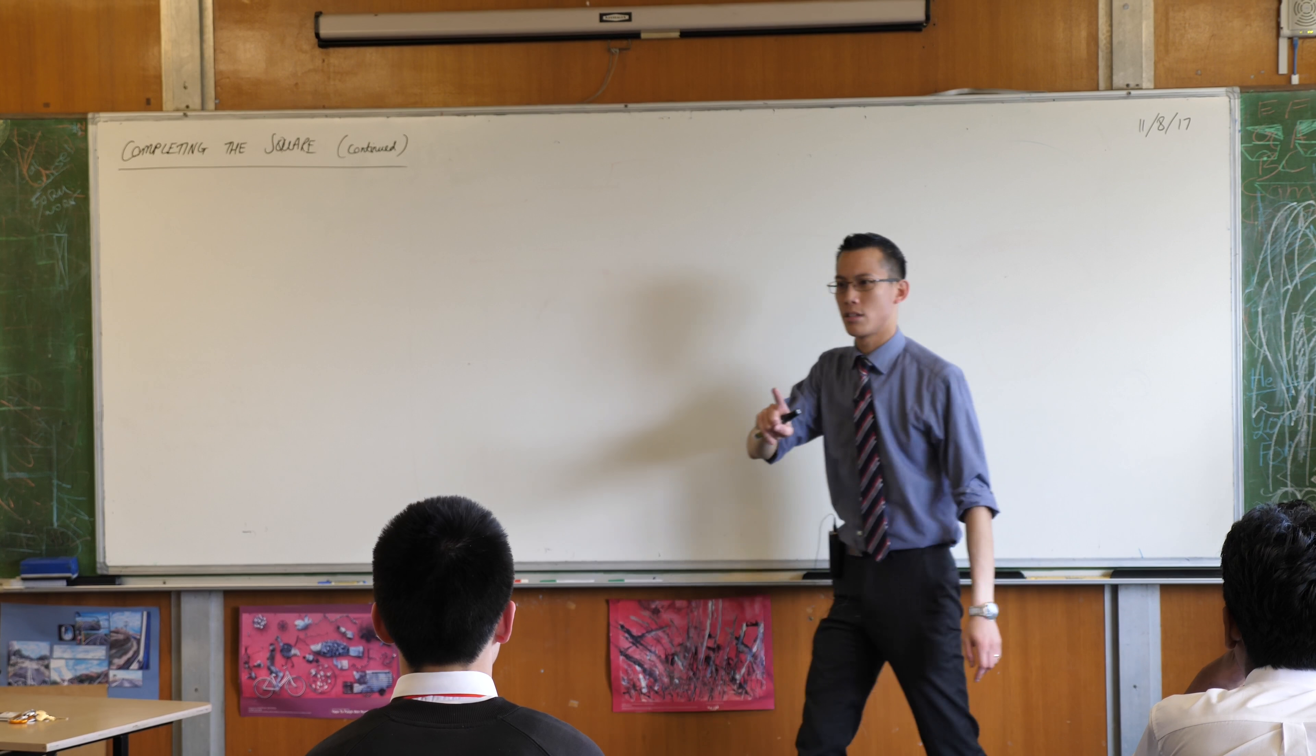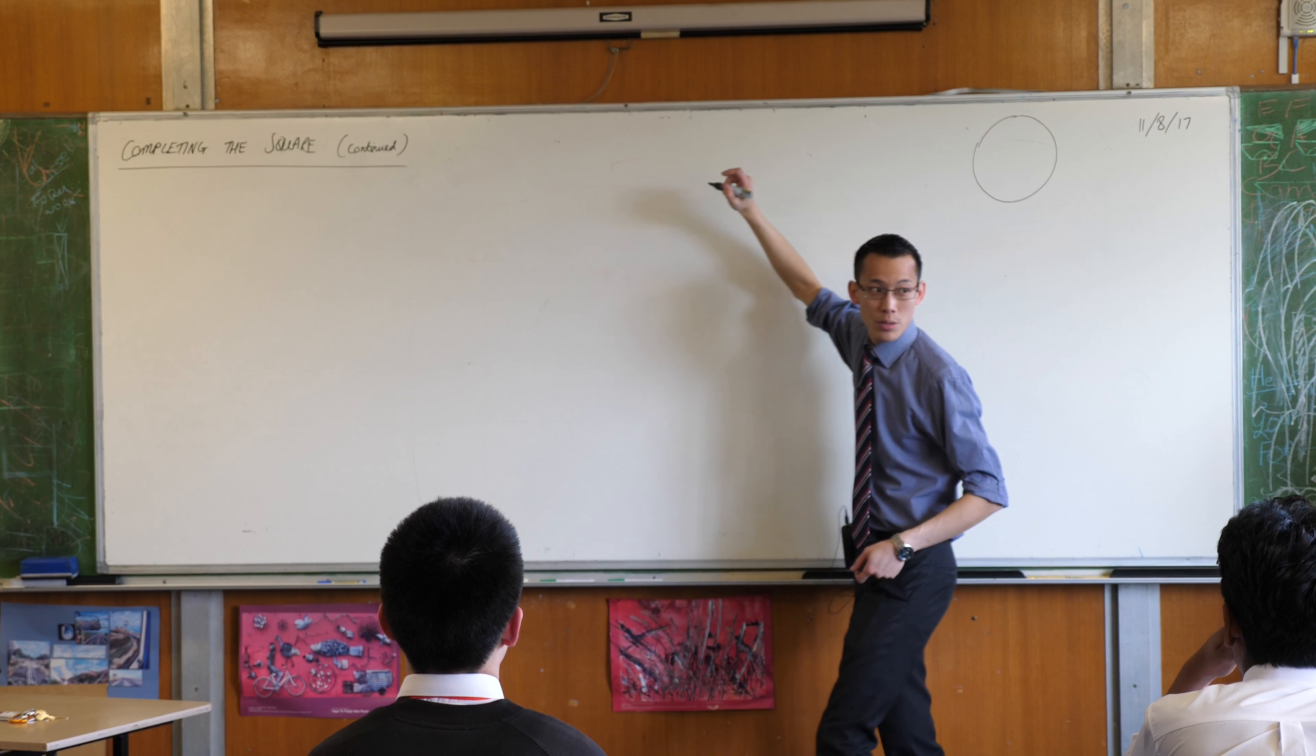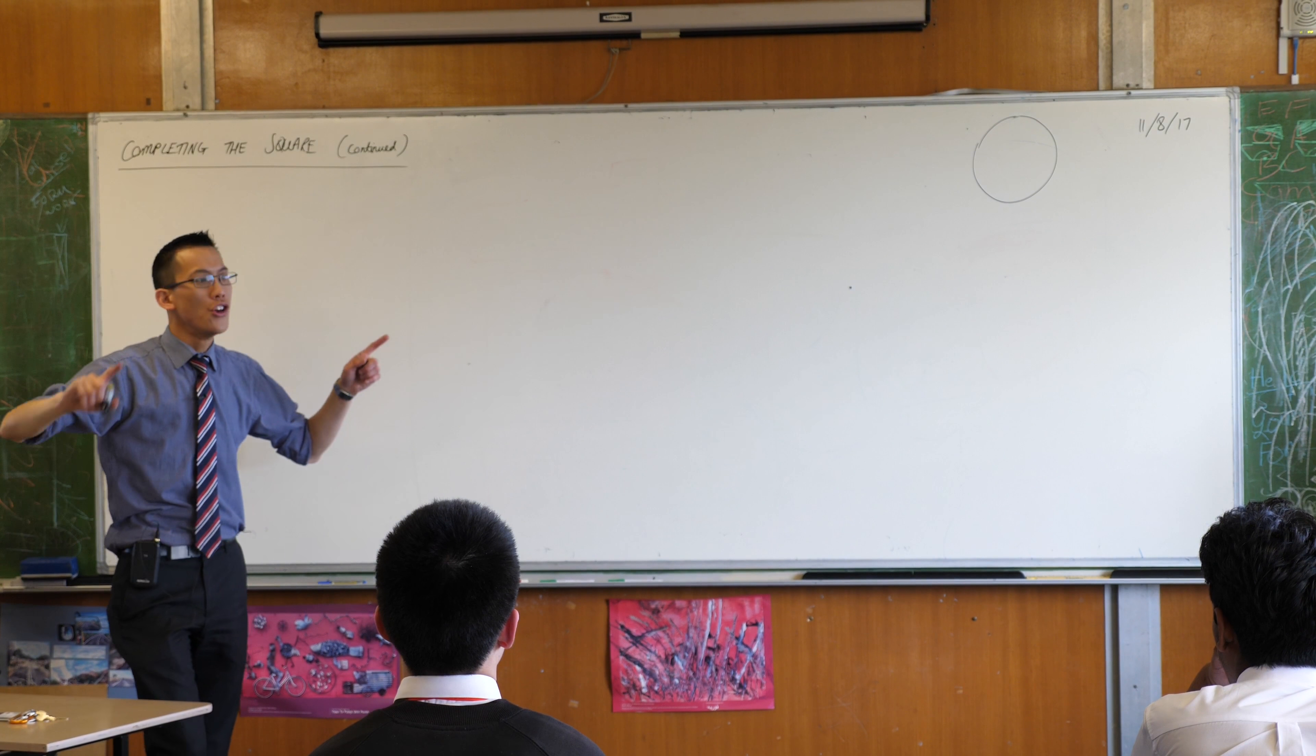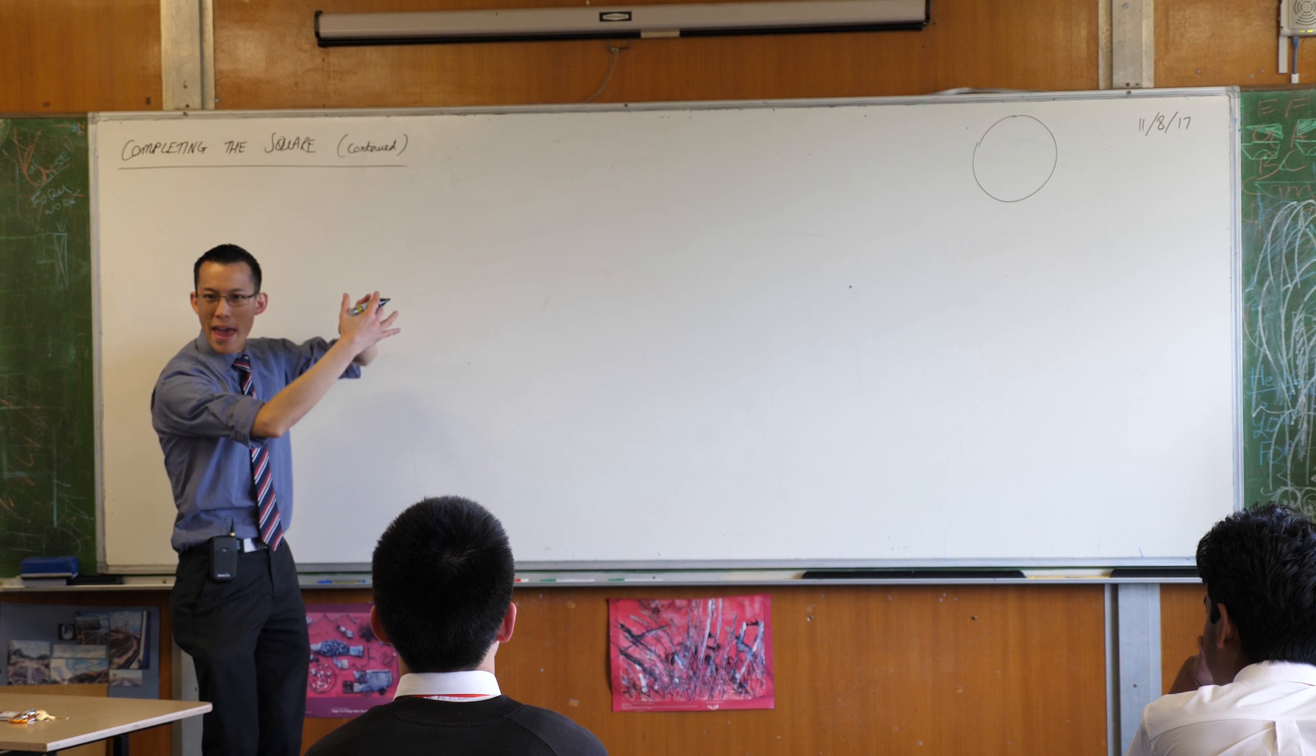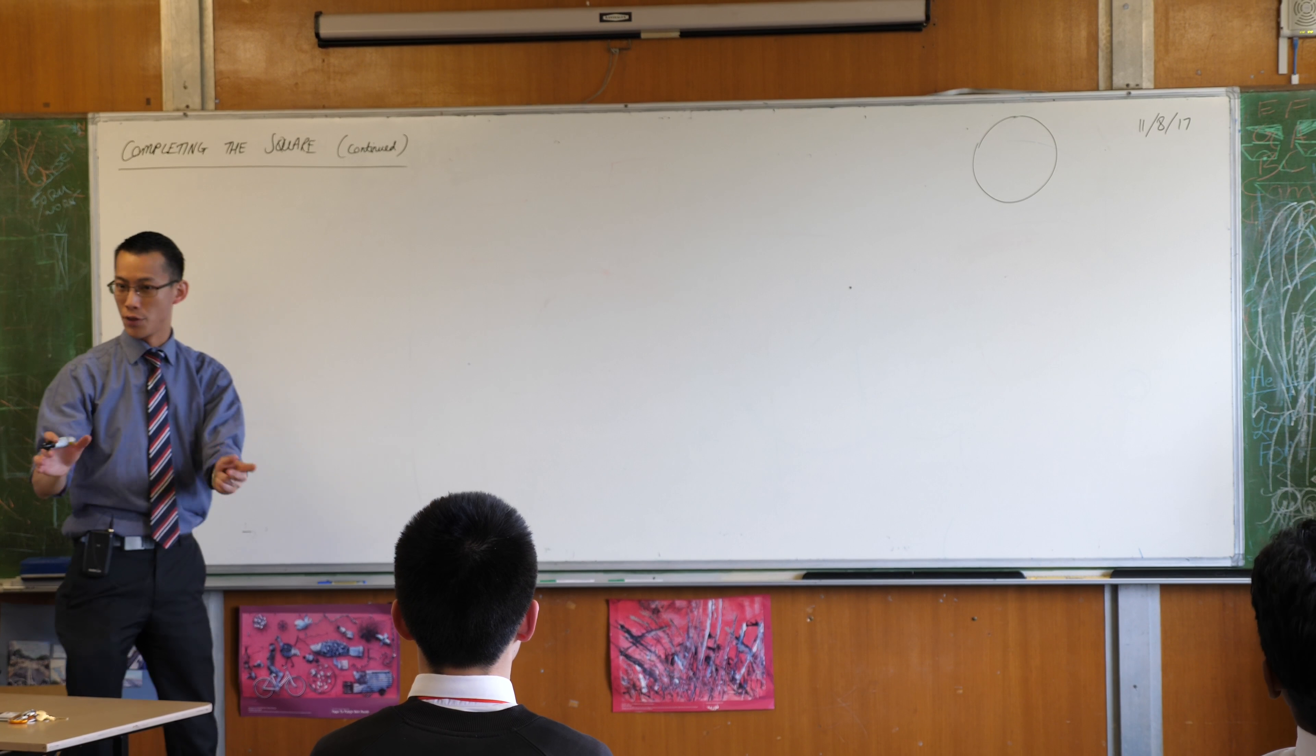There was one other thing I showed you how to do, do you remember? It had to do with this guy. What can we do with this? How is completing the square relevant to them? You can find the center, you can find the radius. When it's some expanded mess of terms, if you complete the square, you can get it factorized and off you go.